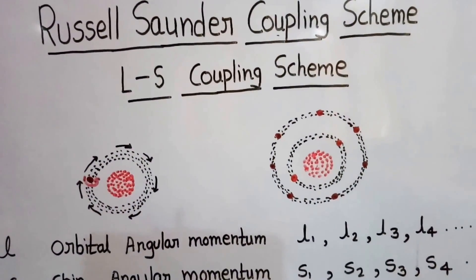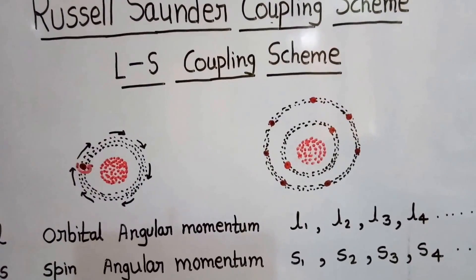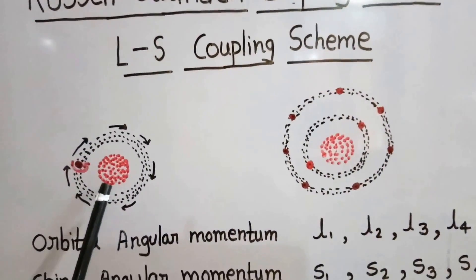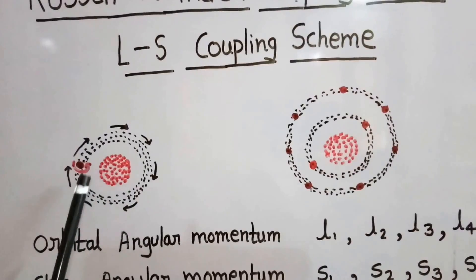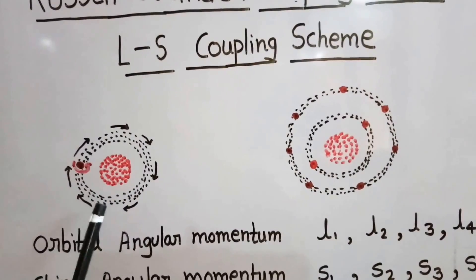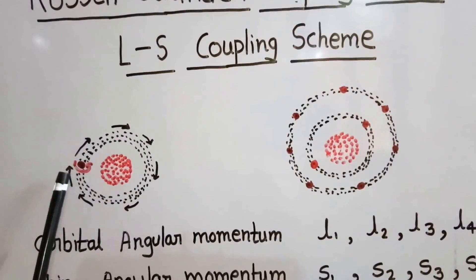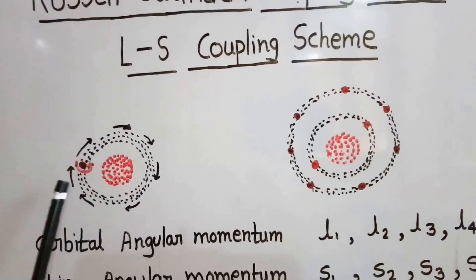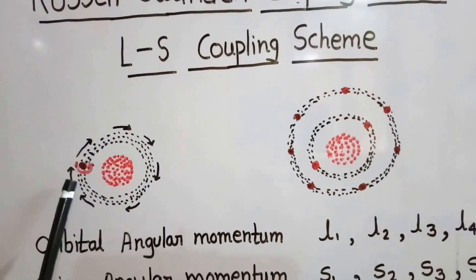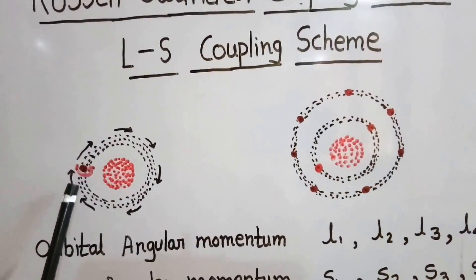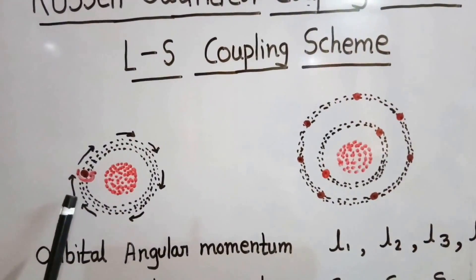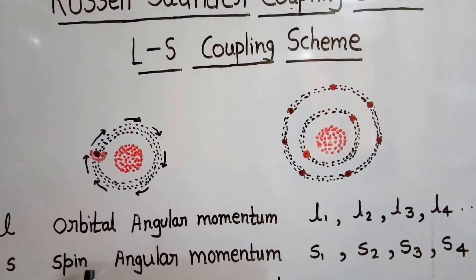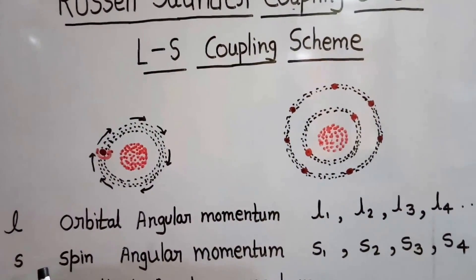In order to understand this scheme, we will first look at the structure of the atom. In the structure of the atom, there is a nucleus at the center and there are subshells in which electrons are moving around it. A moving electron will have orbital angular momentum. The electron also spins around its own axis, so it will have spin angular momentum. The orbital angular momentum is shown by L and the spin angular momentum is shown by S.